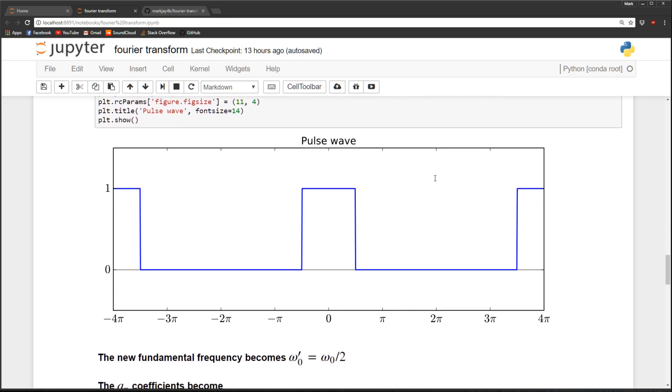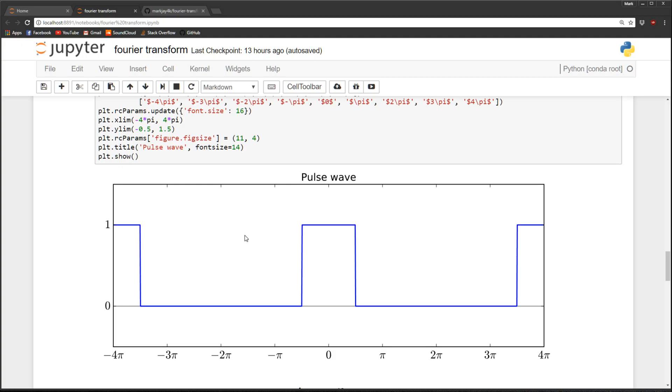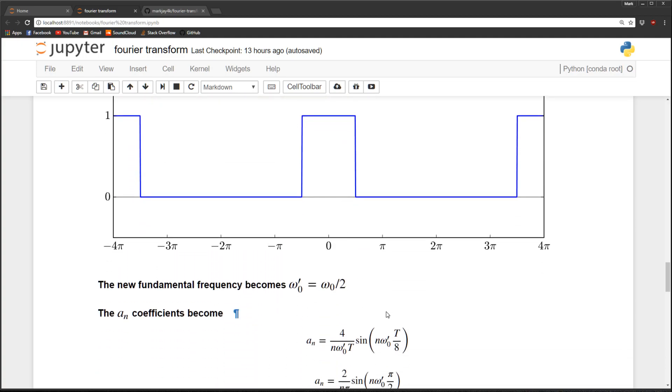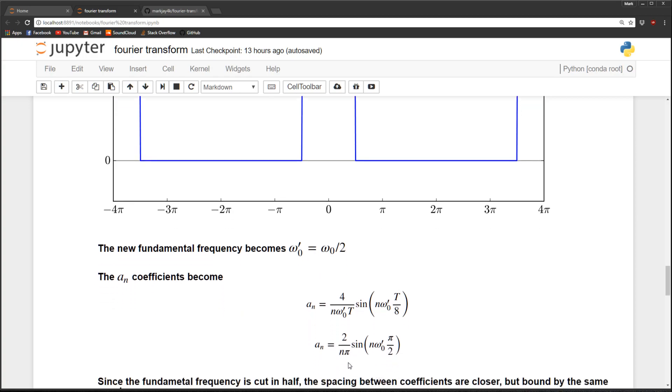So now let's calculate a_n for this square wave, or sometimes called a pulse wave. So our fundamental frequency is going to be omega naught prime, and that's just half of what our previous omega naught was. So when we calculate a_n we get the same answer, except we have omega naught prime instead of omega naught.